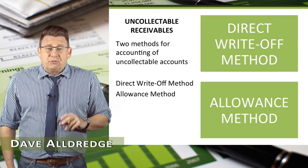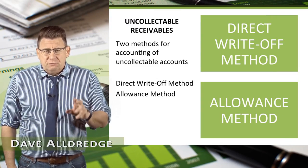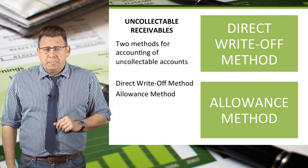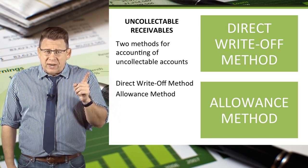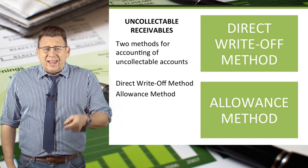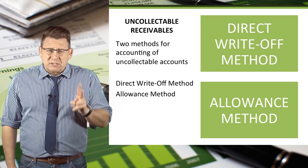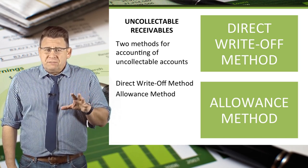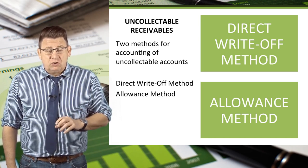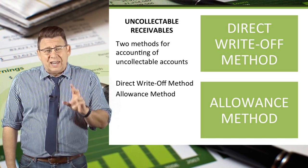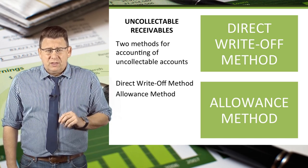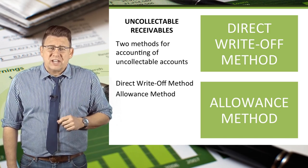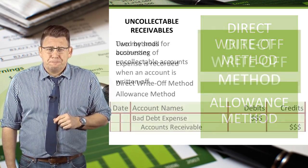There are two methods for accounting for uncollectible accounts: the direct write-off method and the allowance method. Most of the videos in this section will deal with the allowance method. This short video will focus on the direct write-off method.